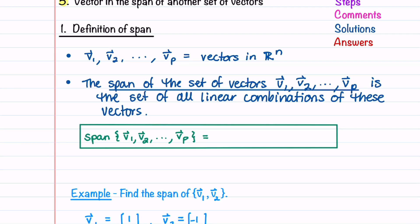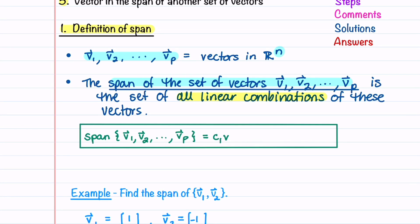Let's start by understanding how the span of a set of vectors is defined. Given a set of vectors v1, v2, all the way up through vp in Rn, the span of this set of vectors is the set of all linear combinations of these vectors. Mathematically, the span of v1 through vp equals c1 times v1 plus c2 times v2, all the way up through cp times vp. This follows from what we learned about linear combinations in section 1.3 part 1.